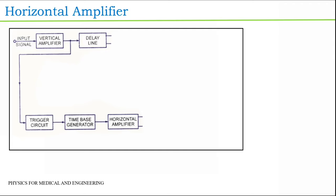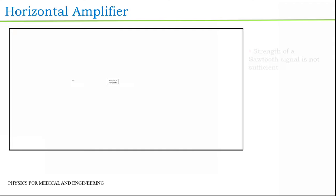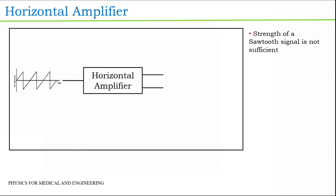The next block is a horizontal amplifier. The strength of a sawtooth signal available at the output of a time base generator is not sufficient. Thus, before applying it to the horizontal plates, the signal is amplified using a horizontal amplifier.